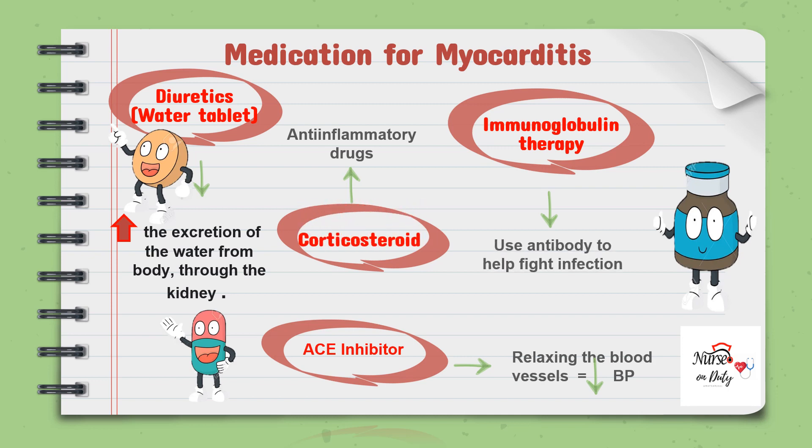Next is corticosteroid. Corticosteroids are steroid hormones with two classifications: glucocorticoids and mineralocorticoids. They are involved in physiologic processes, especially stress response, immune response and regulation, inflammation, protein catabolism, blood electrolyte levels, etc. Corticosteroids are given for patients with inflammations like myocarditis because they are anti-inflammatory drugs.